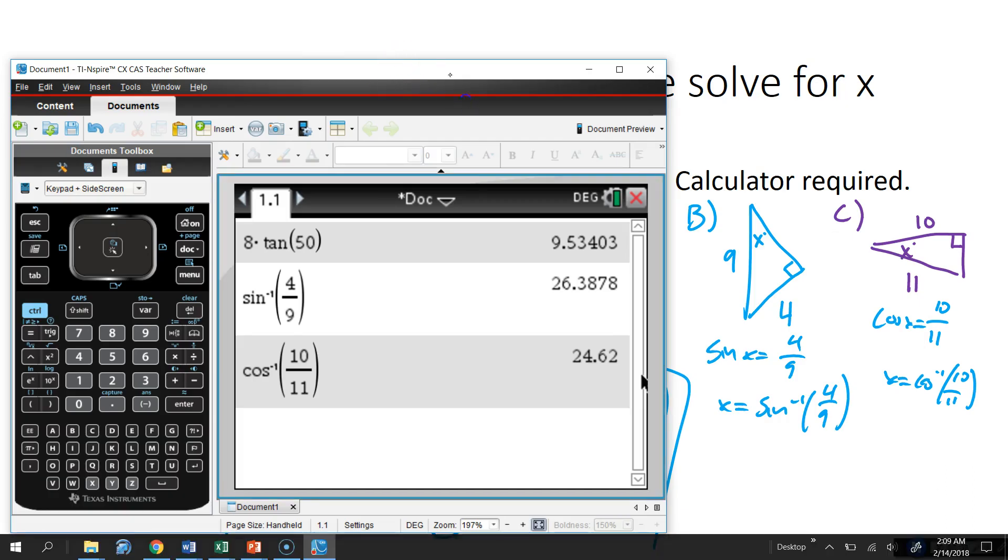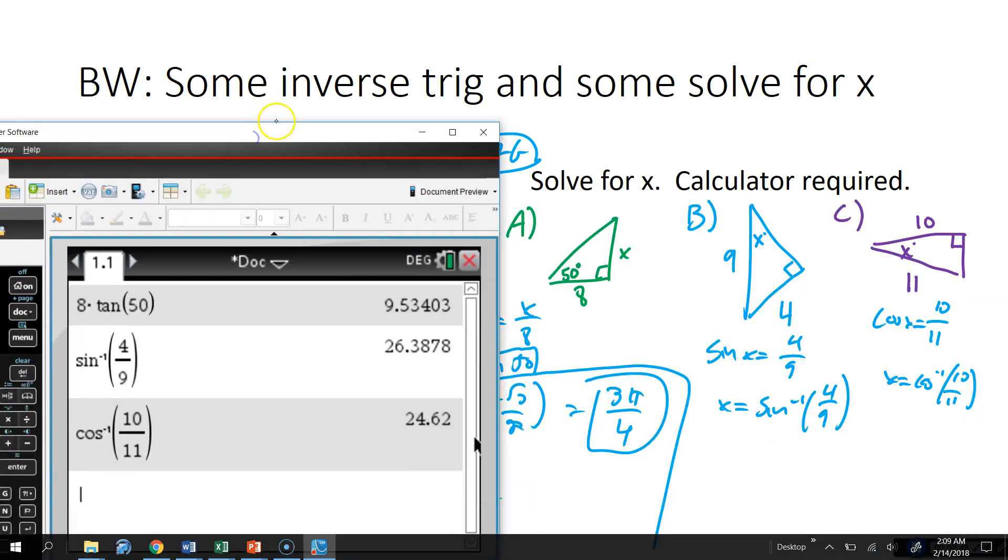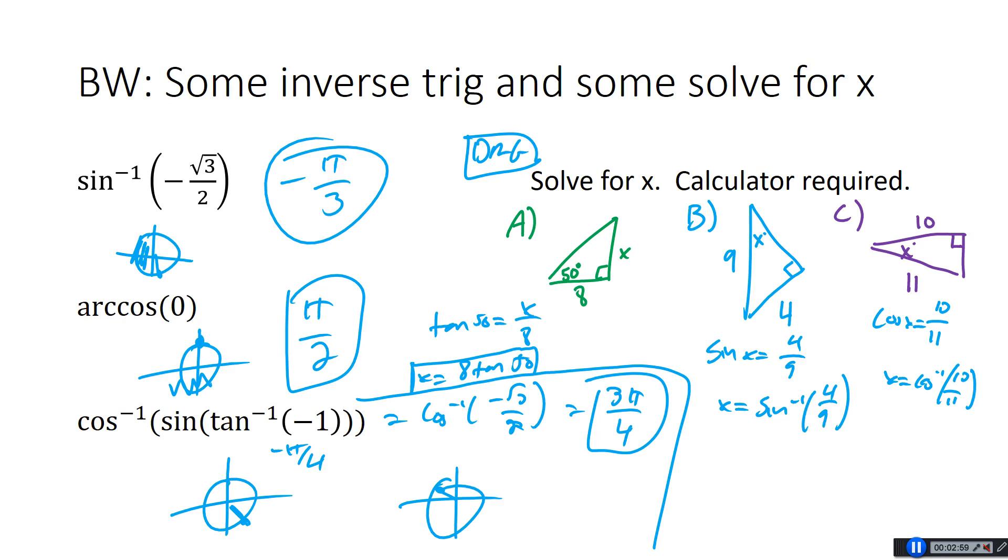So we have 8 tan 50. 8 tan 50 is going to be, let's see, I make sure I'm in degree mode there. Perfect. 9.53403. Sine inverse of 4 ninths, 26.3878. And cosine inverse of 10 elevenths, 24.62. Not too bad. All right, moving on.